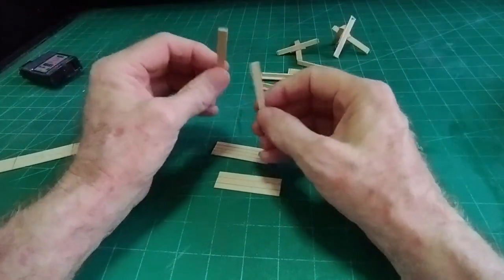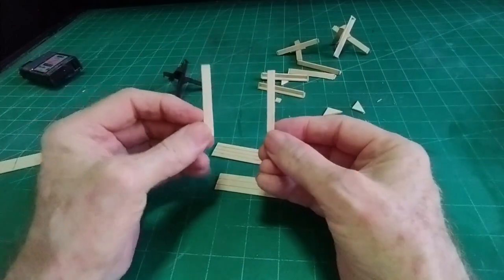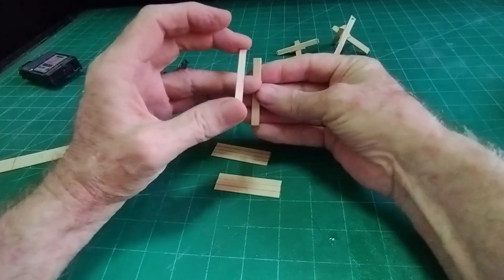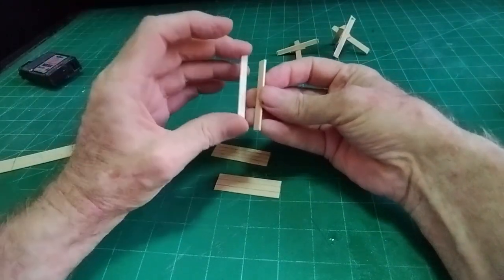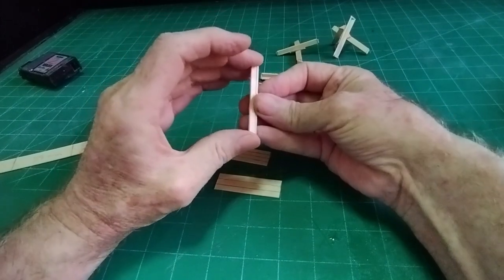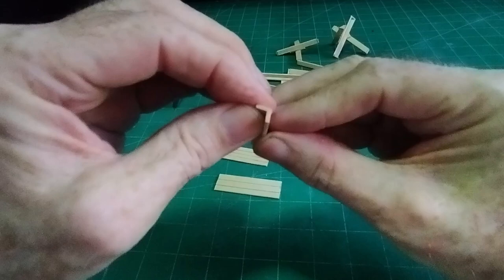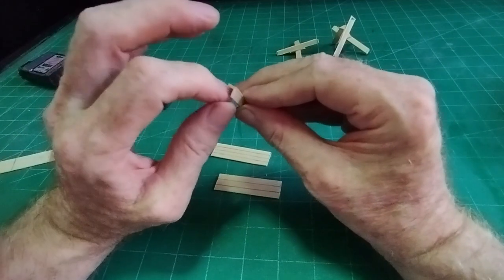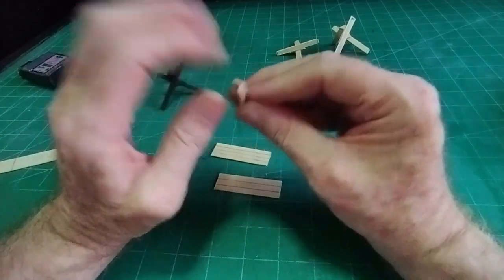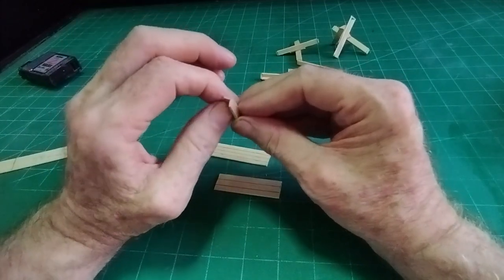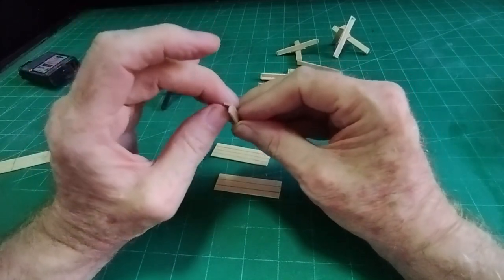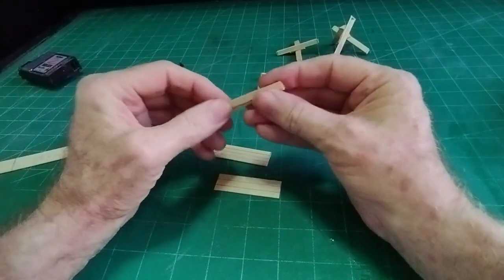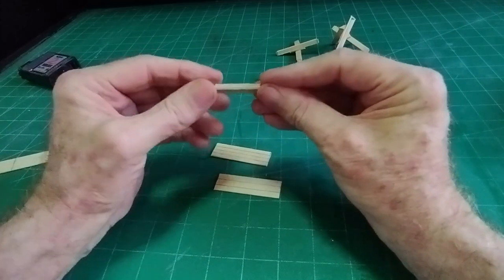Then with PVA glue, the white PVA school glue, just stick that on like that to make an angle like that, which is what most of the tank stops were made from - this angular type material. Some were H section, some were solid, but generally if you look at photos they're generally this angled section.